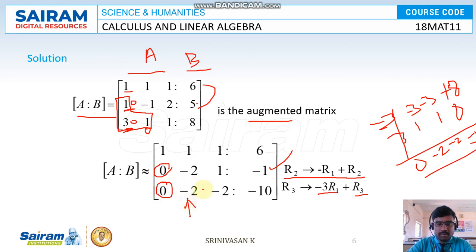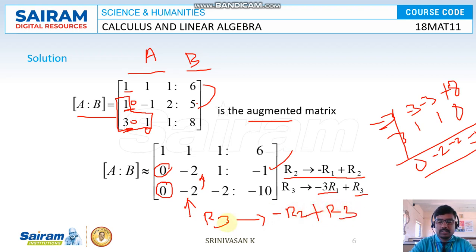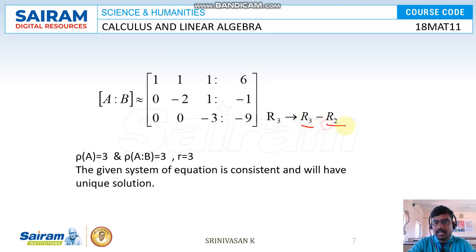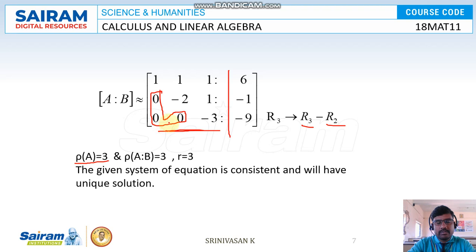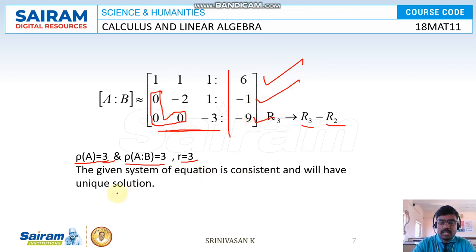Now we make the entry below a22 in R3 zero. Since R2 and R3 both have -2 in the second column, we compute R3 = R3 - R2, which gives [0, 0, -3, -9]. The upper triangular matrix is now complete. Checking the rank of A (ignoring the B column): rank of A = 3, rank of [A|B] = 3, and the number of unknowns n = 3. Since rank of A = rank of [A|B] = r = n = 3, the system is consistent and has a unique solution.